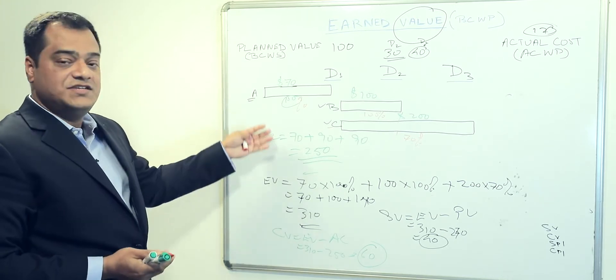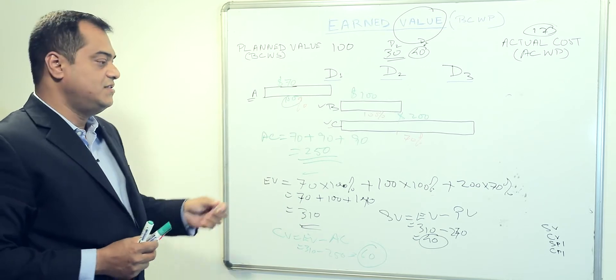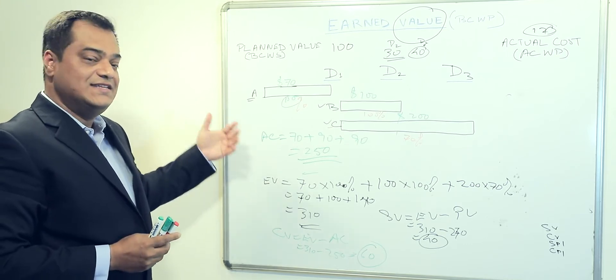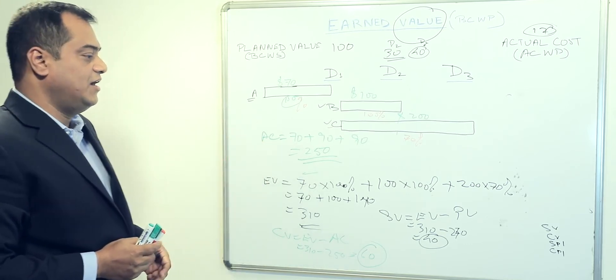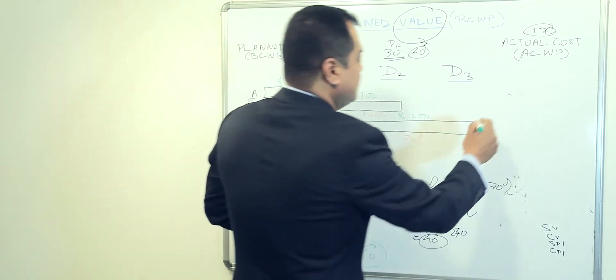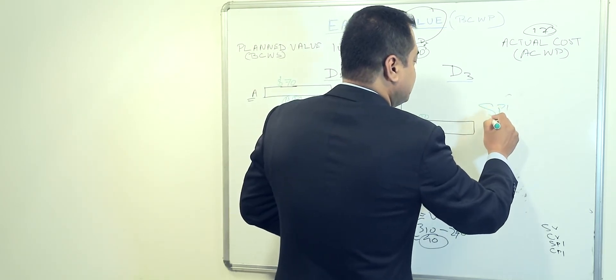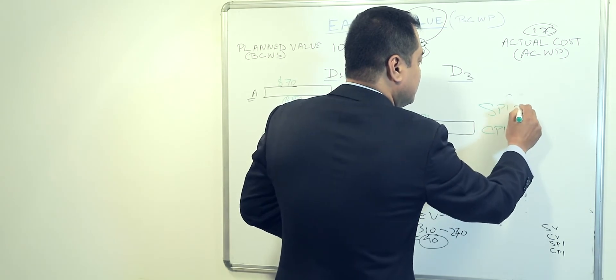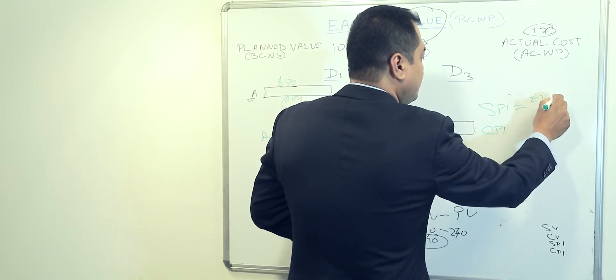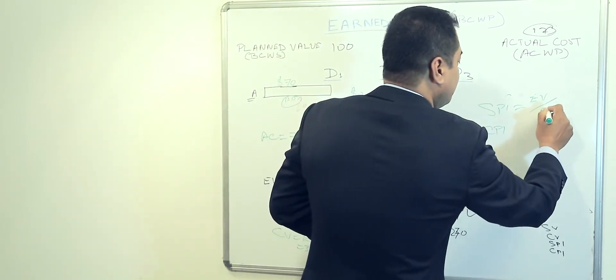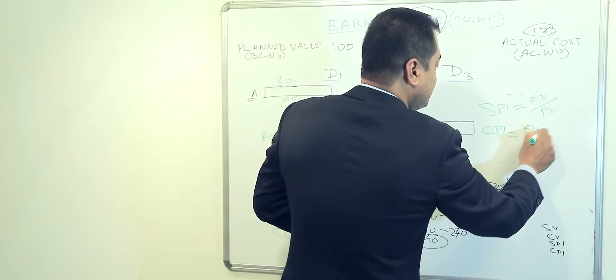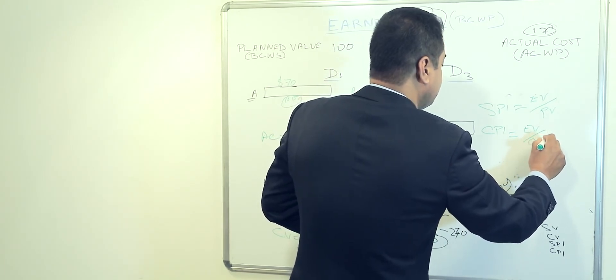This is just measuring the cost. Now if you want to measure in terms of percentage, which means what is the performance indicator between these values, we have got two parameters: schedule performance indicator and cost performance indicator. Schedule performance indicator is your earned value divided by the plan value. Same way, cost performance indicator is earned value divided by actual cost.